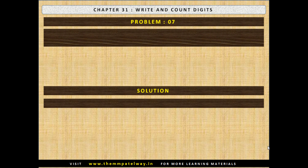Problem No. 7: You write all three-digit numbers on a paper. How many odd numbers will you write? Now stop the video and find the solution. The solution follows: you will write 450 odd numbers.